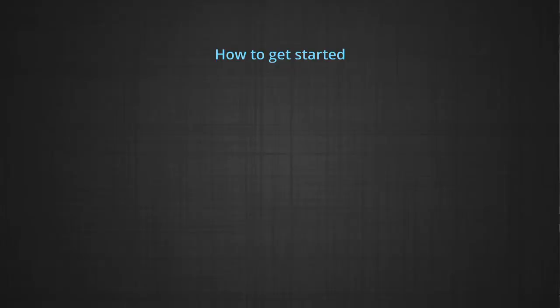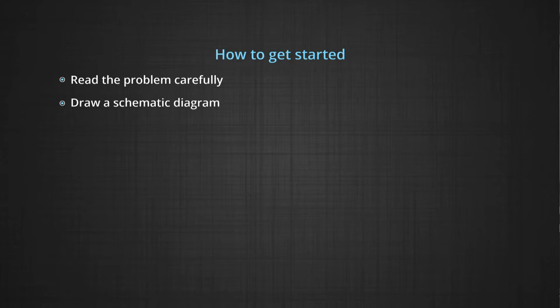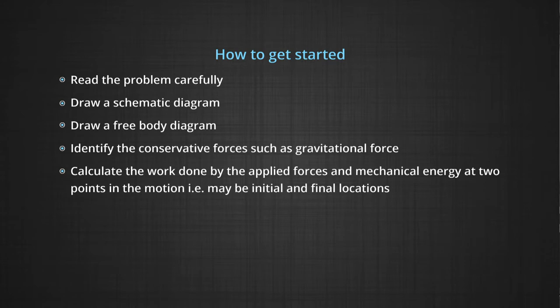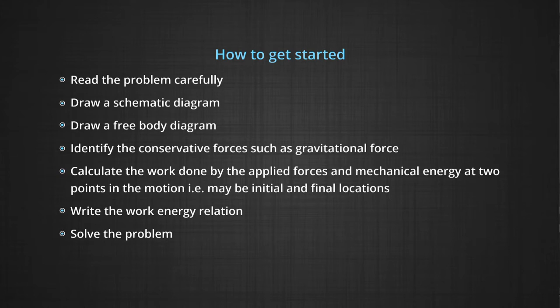How to get started: Read the problem carefully. Draw a schematic diagram. Draw a free body diagram if necessary. Identify the conservative forces, such as gravitational force. Calculate the work done by the applied forces and mechanical energies at two points in motion — this may be initial and final locations. Write the work energy relation and solve the problem.